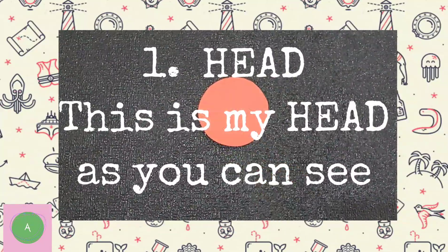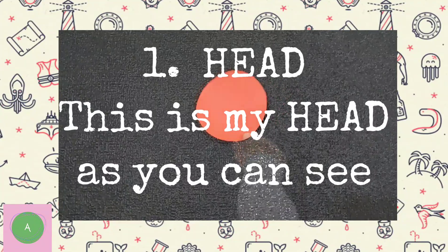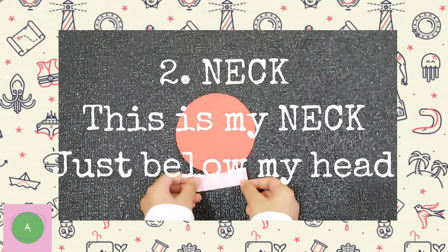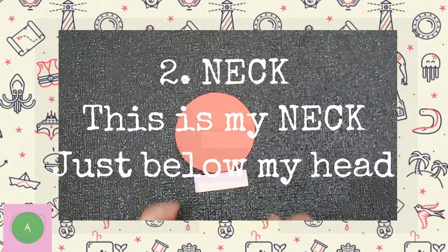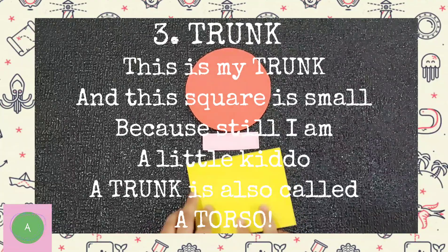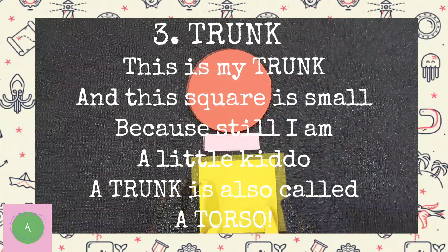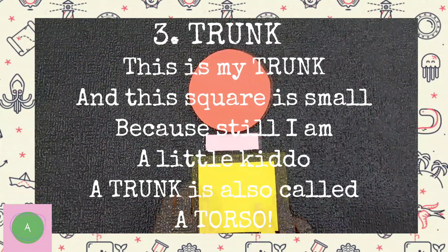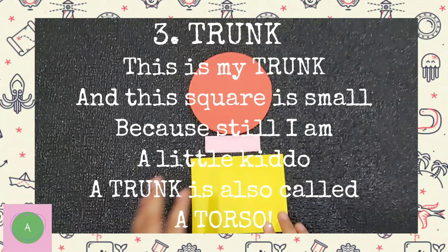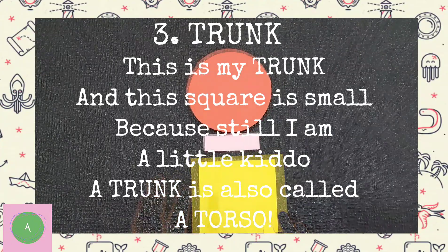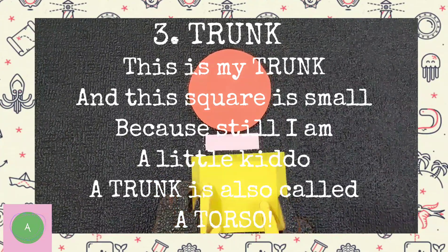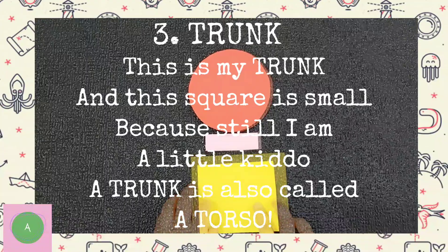This is my head as you can see. This is my neck just below my head. This is my trunk and the square is small, because still I am a kiddo. The trunk is also called the torso.